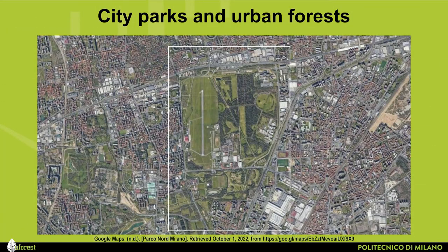The second typology refers to city parks and urban forests greater than 0.5 hectares — large urban or district parks with a variety of land cover and at least partly equipped with facilities for leisure and recreation, such as Parco Nord shown here in the map.